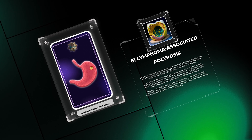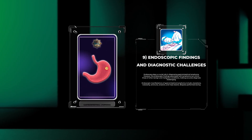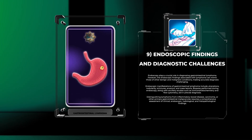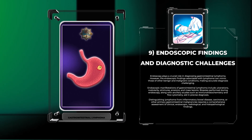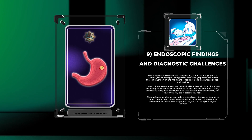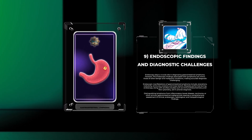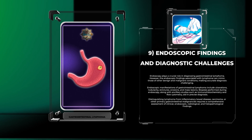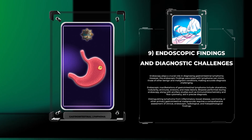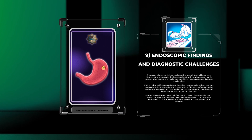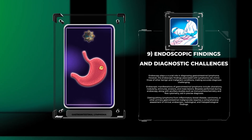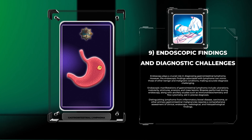Endoscopy plays a crucial role in diagnosing gastrointestinal lymphoma; however, endoscopic findings associated with lymphoma can mimic those of other benign and malignant conditions, making accurate diagnosis challenging. Endoscopic manifestations include ulcerations, nodularity, strictures, erosions, and mass lesions. Biopsies performed during endoscopy, along with ancillary studies such as immunohistochemistry and flow cytometry, aid in precise diagnosis. Distinguishing lymphoma from inflammatory bowel disease, carcinoma, or other primary gastrointestinal malignancies requires a comprehensive assessment of clinical, endoscopic, radiological, and histopathological findings.